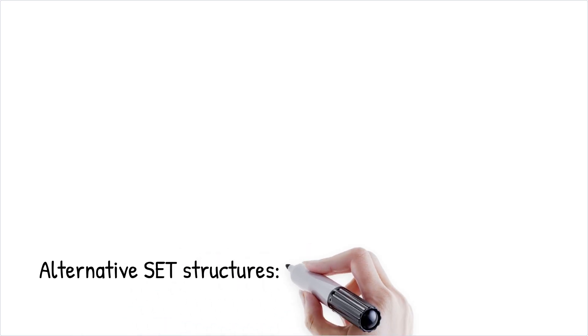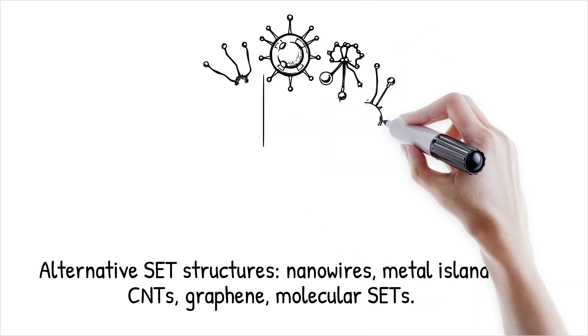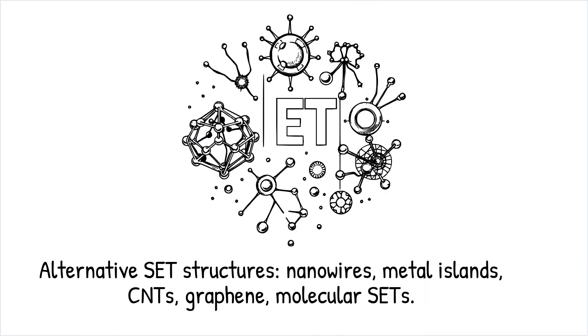While quantum dots are widely used, other structures can confine electrons and achieve similar functionality. These include nanowires, metal islands, carbon nanotubes, graphene quantum dots, and molecular SETs.